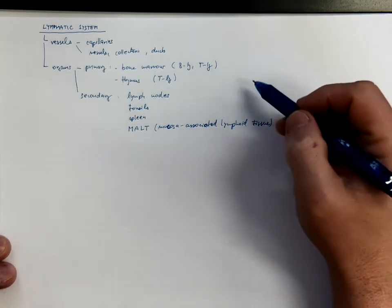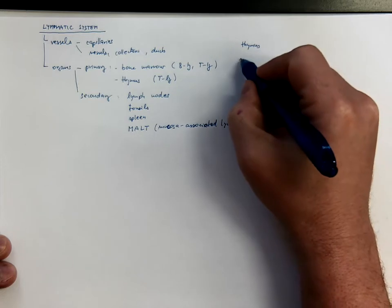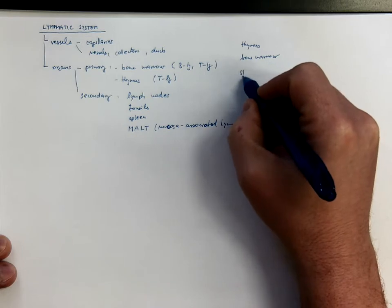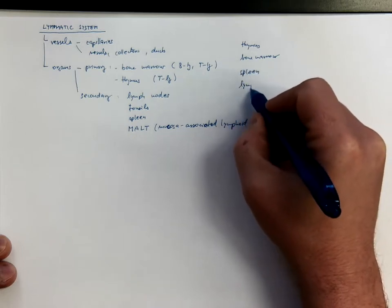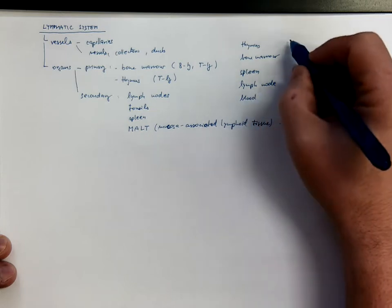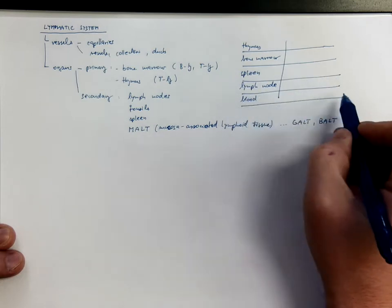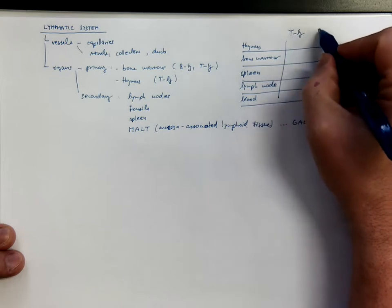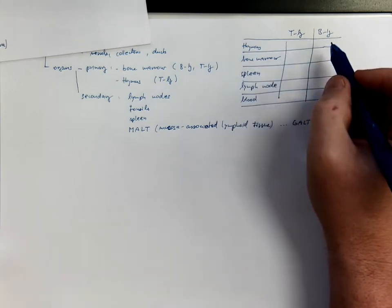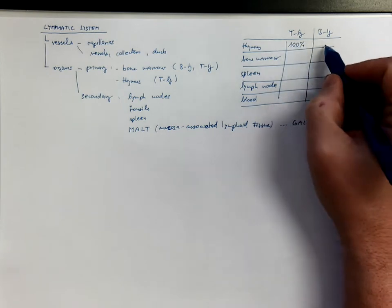If we look on the distribution of various types of lymphocytes in the thymus, bone marrow, spleen, lymph nodes and the blood, you would realize that the distribution of T lymphocytes and B lymphocytes is not even. So, for example, this is related only by T lymphocytes. There are no B lymphocytes there.